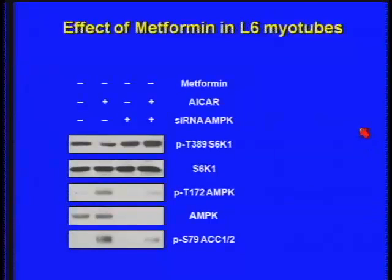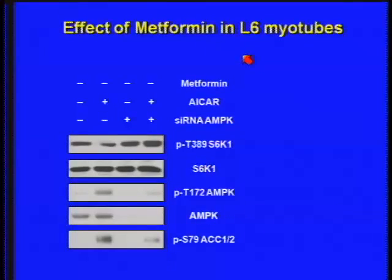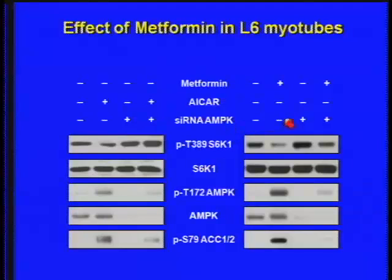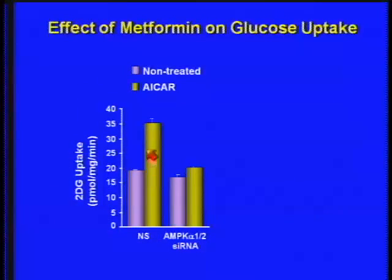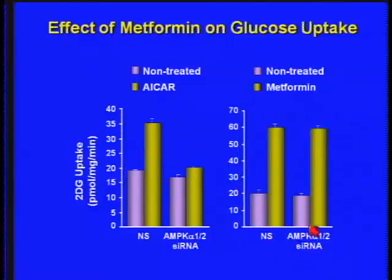Does this have any biological impact? We got together with André Marette's group in Quebec City and asked what happens in L6 myotubes when you down-regulate AMP kinase. It's known that metformin and AICAR induce glucose uptake in these cells, partly through suppression of the TOR pathway. When we deplete these cells of AMP kinase and add AICAR, there's no effect on the TOR pathway. But if we do the same experiment with metformin, we still shut down the TOR pathway in the absence of AMP kinase. Glucose uptake is stimulated by AICAR in the wild-type setting, but when we knock down the alpha-1 and alpha-2 catalytic subunits, we totally suppress that response. Yet there's absolutely no effect on the metformin response. So we're turning off this pathway by energy depletion or turning it on by glucose, but independent of AMP kinase.